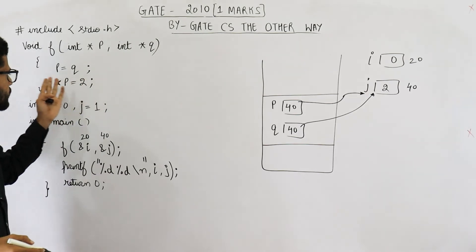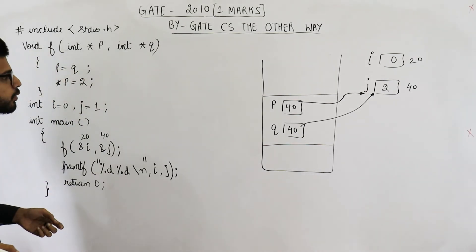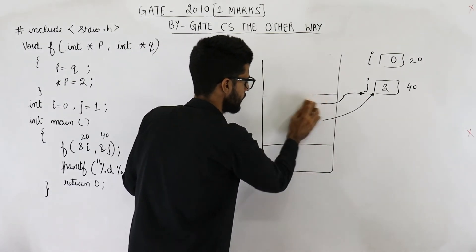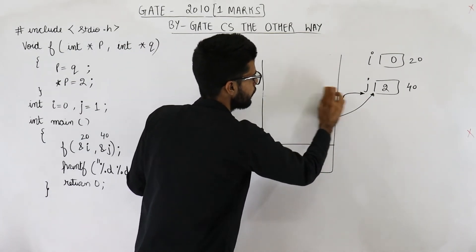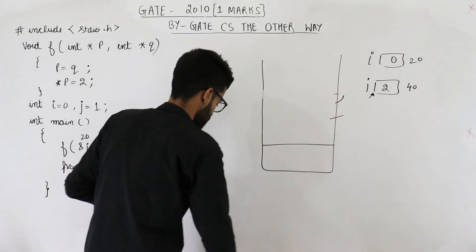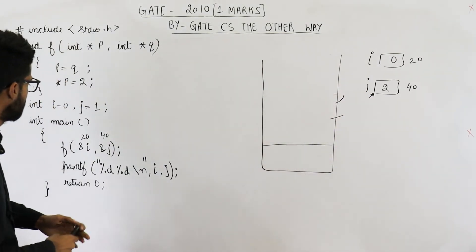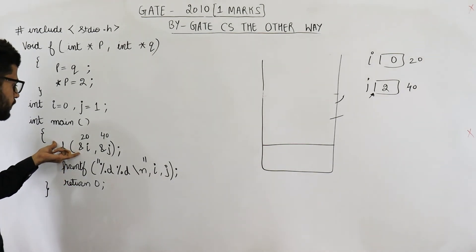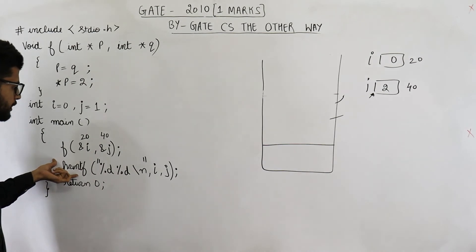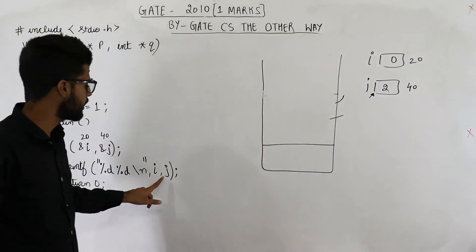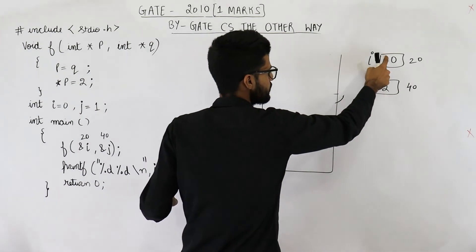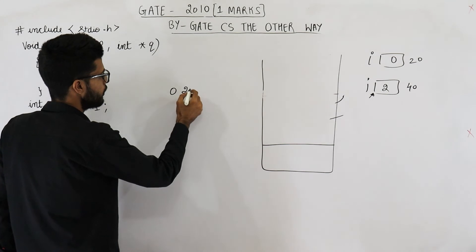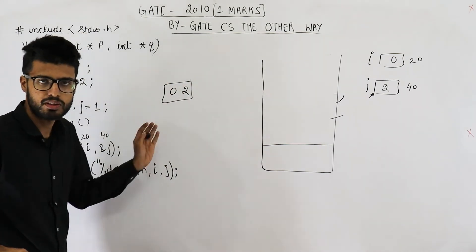That was the last line of function f, so we return back to the main function. The activation record for f is deleted because the function has ended. We come back to the main function and resume from the next line. The printf is trying to print i and j — that means it will print 0 and 2. So the output is 0, 2. This is the answer to this question.